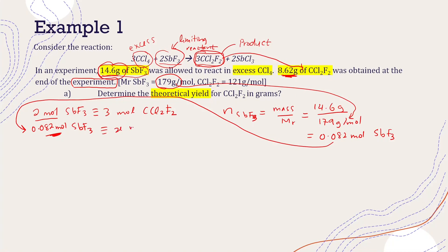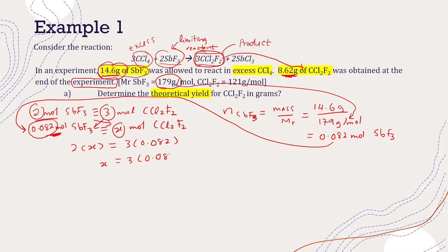Now, how many moles of CCl2F2 will you get? Using cross multiplication: 2 times X equals 3 times 0.082. Solving this gives X equal to 0.123 moles. So you get 0.123 moles of CCl2F2.